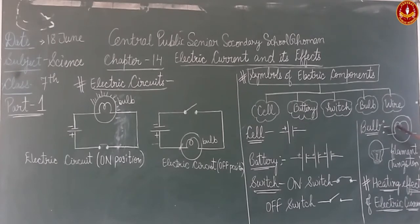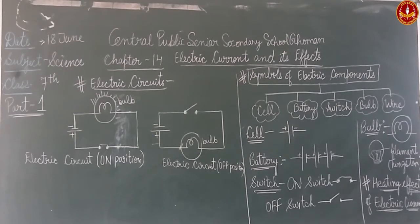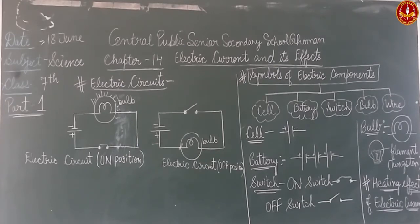Our next electric component is the bulb. In the bulb symbol, we draw a W shape inside, and then a round circle around it. Inside the bulb there are two wires connected with a spring, and that spring-like structure is called a filament. The filament is made of tungsten element. When the spring-like filament gets disconnected, our bulb does not glow - we say the bulb is fused. But when it is connected, our bulb glows.